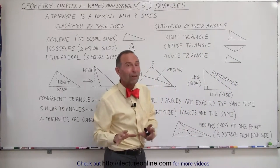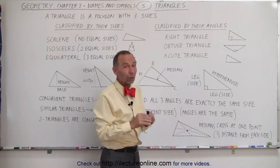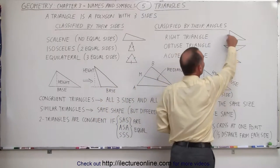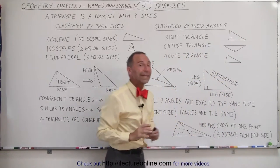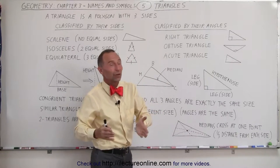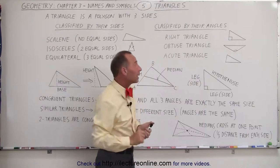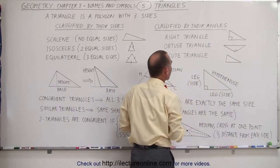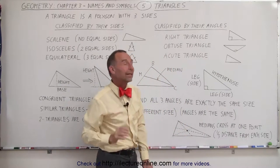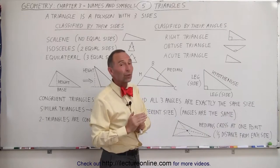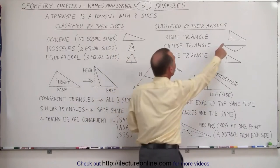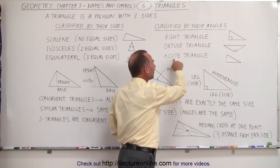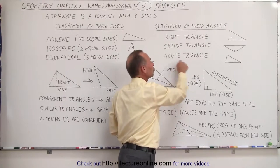It's not possible to have a triangle with two obtuse angles — in other words, two angles greater than 90 degrees — because when you sum up the angles of a triangle, they always add up to 180 degrees, so it wouldn't be possible. If none of the angles are greater than 90 degrees and all of them are less than 90 degrees, we call it an acute triangle.